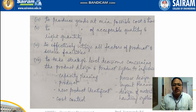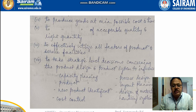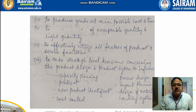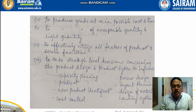Further functions include effectively utilizing all factors of production and service facilities, and taking strategic-level decisions concerning product design and the production system — covering capacity planning, production planning, available machinery, new product identification, cost control, process design, layout planning, material handling design, and new product design.